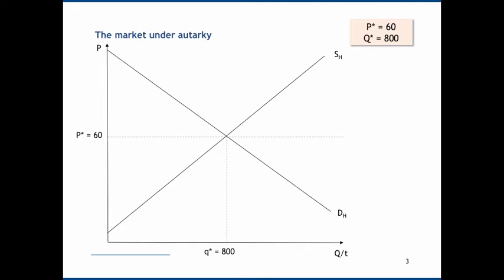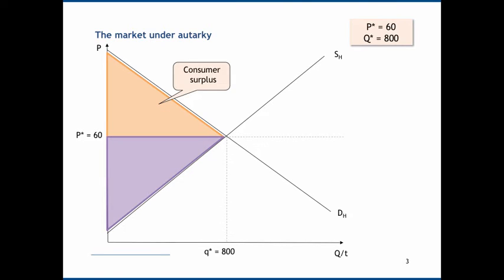The area below the demand curve and above the price line — this triangle — represents how much value consumers are getting: the difference between how much they are willing to pay and how much they actually pay. This is consumer surplus. Similarly, the triangle below the price line but above the supply curve — this purple triangle — shows how much profit producers make by selling at a higher price than they're willing to accept. This is producer surplus. We'll use these concepts to derive our welfare effects.